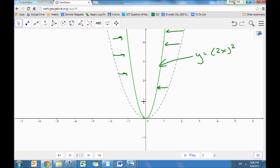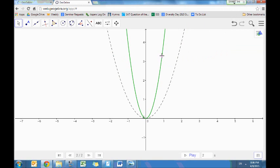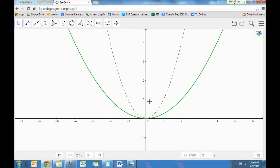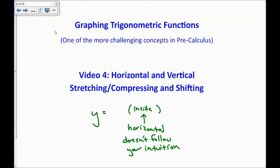And the same thing will happen if I put in here instead a 0.5 or one half of x, it actually will become twice as wide. So things happen inside the parentheses, it's something horizontal, and it doesn't follow your intuition.